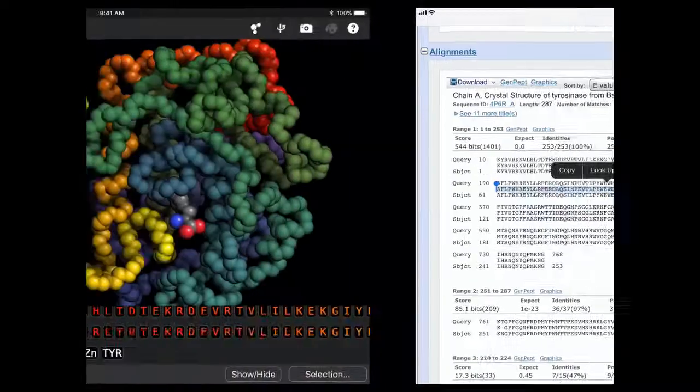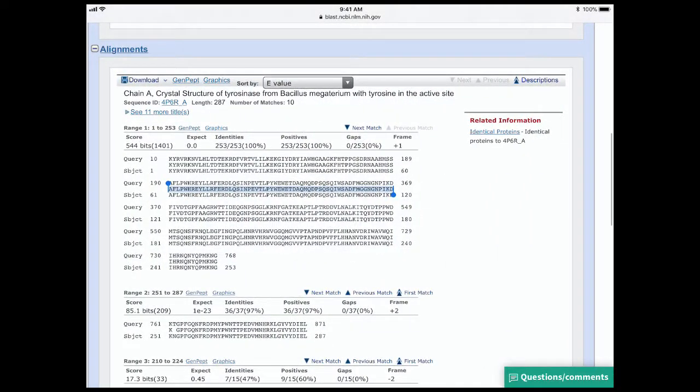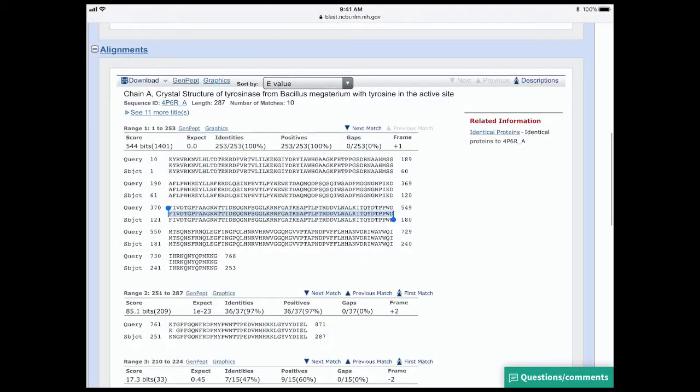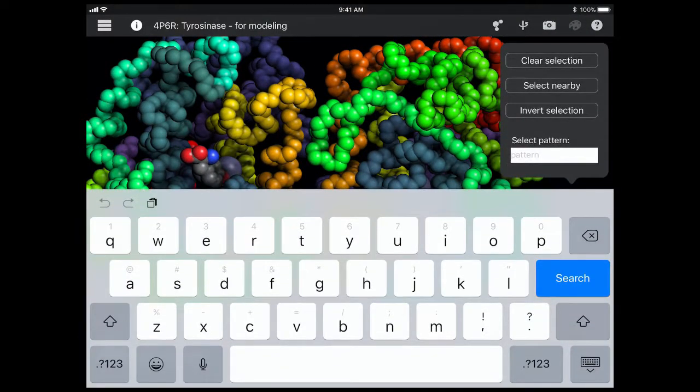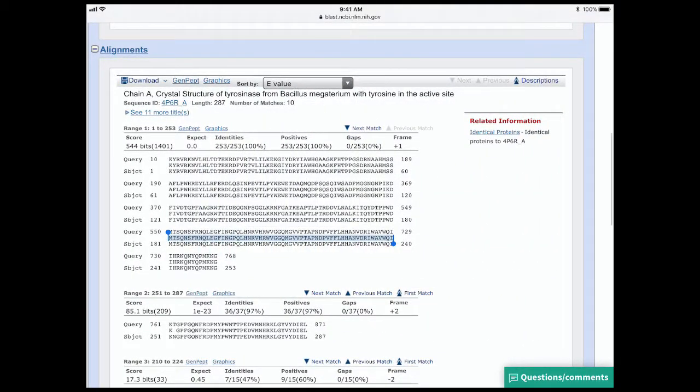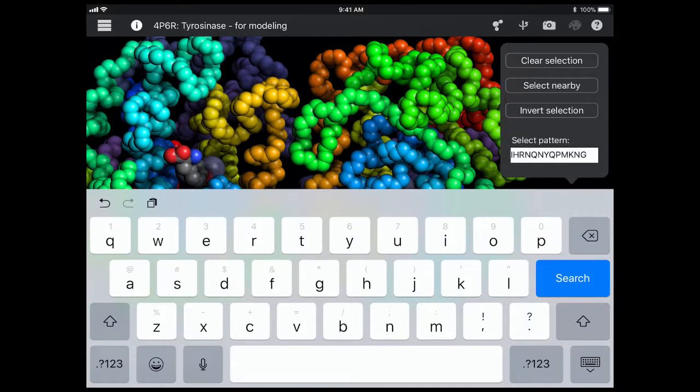Then I repeat the process. I go to the next row, copy, find those sequences in the protein in Molecule World. And I paste those sequences in the select pattern box. And I repeat this until I've highlighted all the amino acids that remain in the protein after the frameshift.